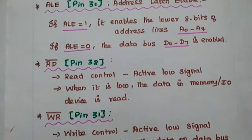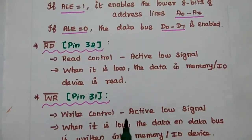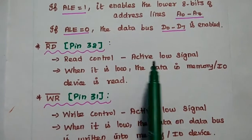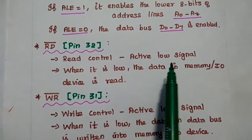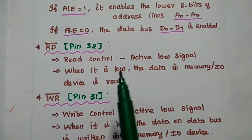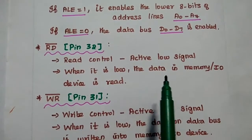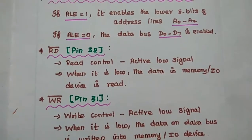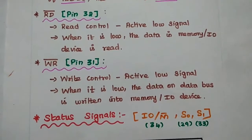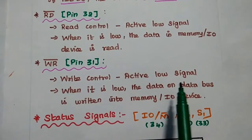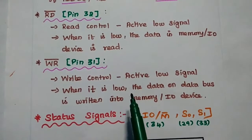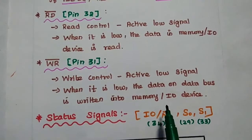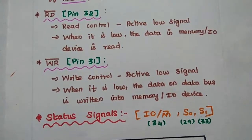Read bar is the read control signal. The bar represents an active low signal — when it is low, it activates data from the memory or input/output device. Write bar is also an active low signal; when it is low, the data on the data bus is written into the memory or input/output device.